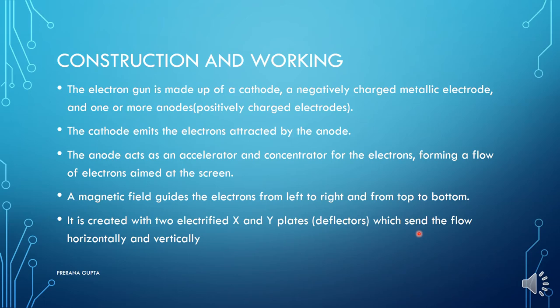To repeat: in the CRT monitor, the cathode throws the electron beam, and the anode concentrates and diverts the electrons to a particular position. The anode also provides acceleration — increasing the speed of electrons so they reach the screen very quickly. The left-to-right and top-to-bottom movement of electron beams is guided by the magnetic field, which is generated by the X and Y plates, called deflectors or deflecting coils. These guide the electrons to be thrown horizontally or vertically onto the screen.